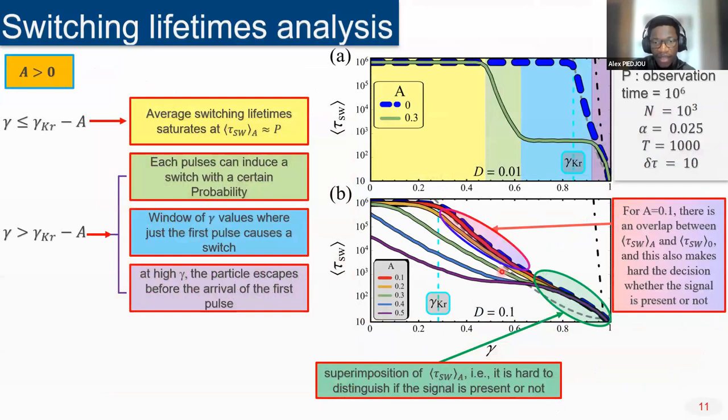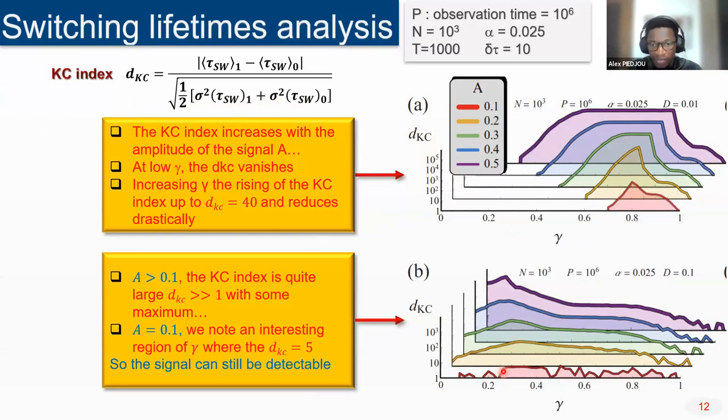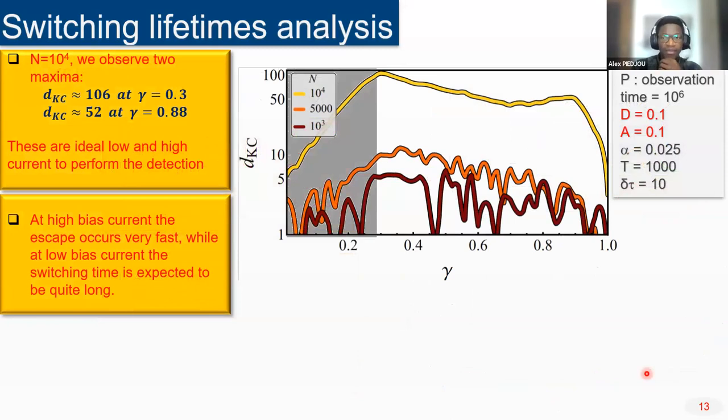For this case here, where the mean switching times when there is no signal, the blue dashed curve, and the red curve are confused, analyzing the DKC, we observe that we have some maxima that we see here. That means the signal can still be detectable. To improve this statistical analysis, we increase the number of observations, the repetition of experiments. We repeat experiments more than what was previously mentioned. We start with 10,000 and then we increase to 100,000, the number of times we do the experiment, and we observe that we clearly have two values of bias current, the low and high value of the bias current of the junction, that might be good to perform our detection.